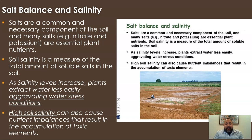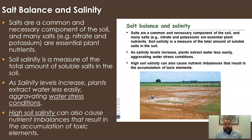Salts are a common necessary component of soil and many salts are essential plant nutrients. Soil salinity is a measure of the total amount of soluble salts in the soil. As salinity levels increase, plants extract water less easily — you get aggravated water stress conditions. Water does not move easily when you have too much salt in the system. High soil salinity can also cause nutrient imbalances that result in the accumulation of toxic elements.